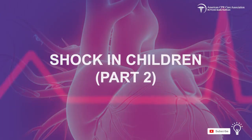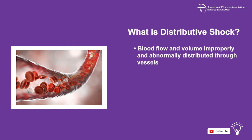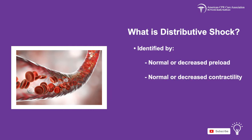Welcome to the second video in our series on shock in children. The second form of shock that occurs in children is distributive shock, which is when the blood flow and volume is improperly and abnormally distributed through vessels and there is decreased organ and tissue perfusion. Distributive shock can be identified as normal or decreased preload, normal or decreased contractility, and an afterload that is variable.